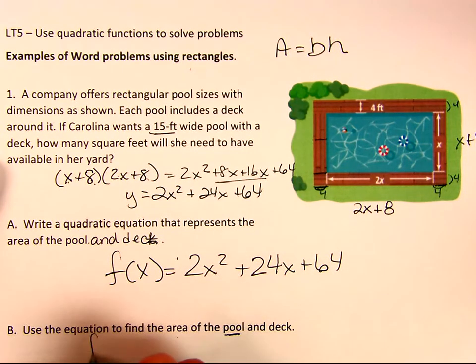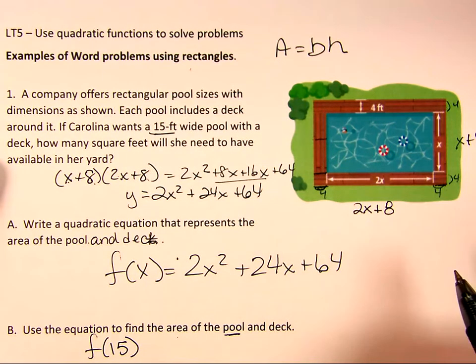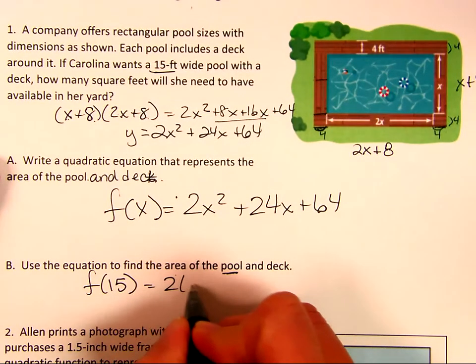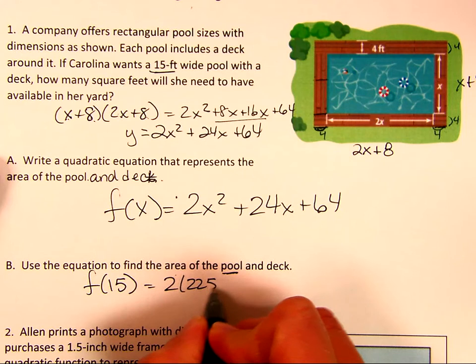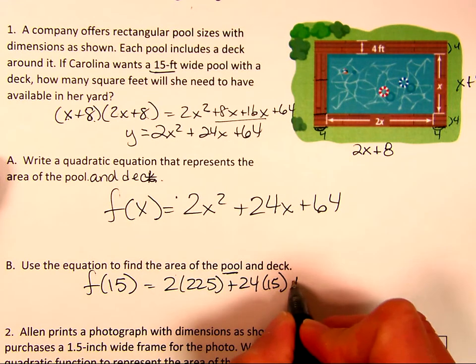So we know that the pool was 15 by 30, but they want this whole thing. So basically that means I just find f of 15, because I'm saying, what would that whole area be if x was 15? So I'm going to plug it in. I get 2 times 15 squared, which is 225, plus 24 times 15, which isn't in my head right now.